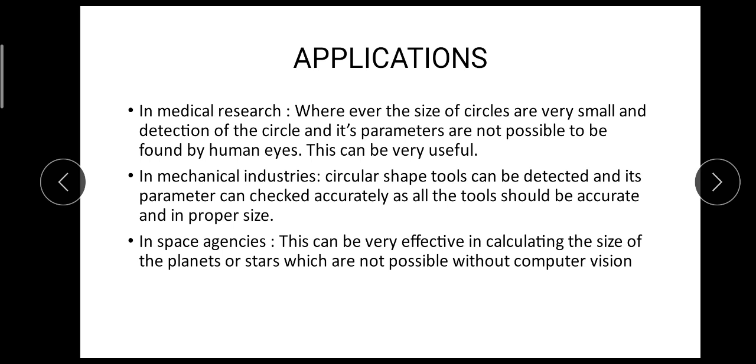So the applications—that is the need of circle detection. In medical research, where the size of circles are very small and detection of the circle and its parameters are not possible to be found by human naked eyes, this can be very useful. In mechanical industries, circular shape tools can be detected and its parameters can be checked accurately as all the tools should be accurate and in proper size. In space agencies, this can be very effective in calculating the size of the planets or stars which are not possible without computer vision.